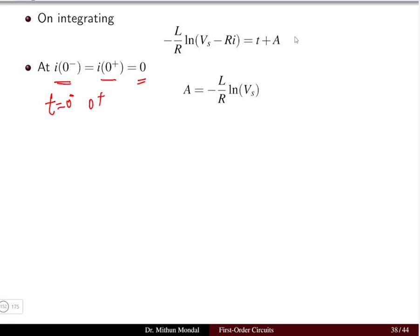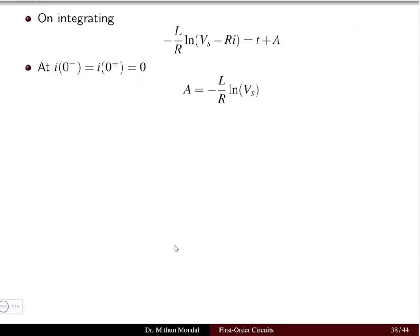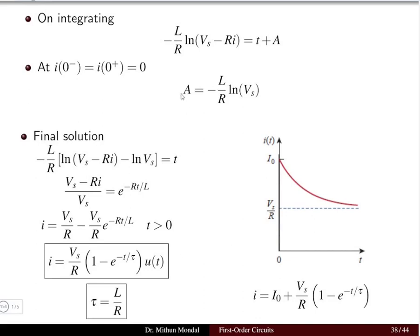Since the inductor was initially uncharged, the current is zero for all t ≤ 0. Substituting t = 0 into the integrated equation gives the constant A = −(L/R)·ln(Vs). Substituting this back and simplifying, the complete solution for all time t is: i(t) = (Vs/R)·[1 − e^(−t/τ)]·u(t), where the time constant τ = L/R.